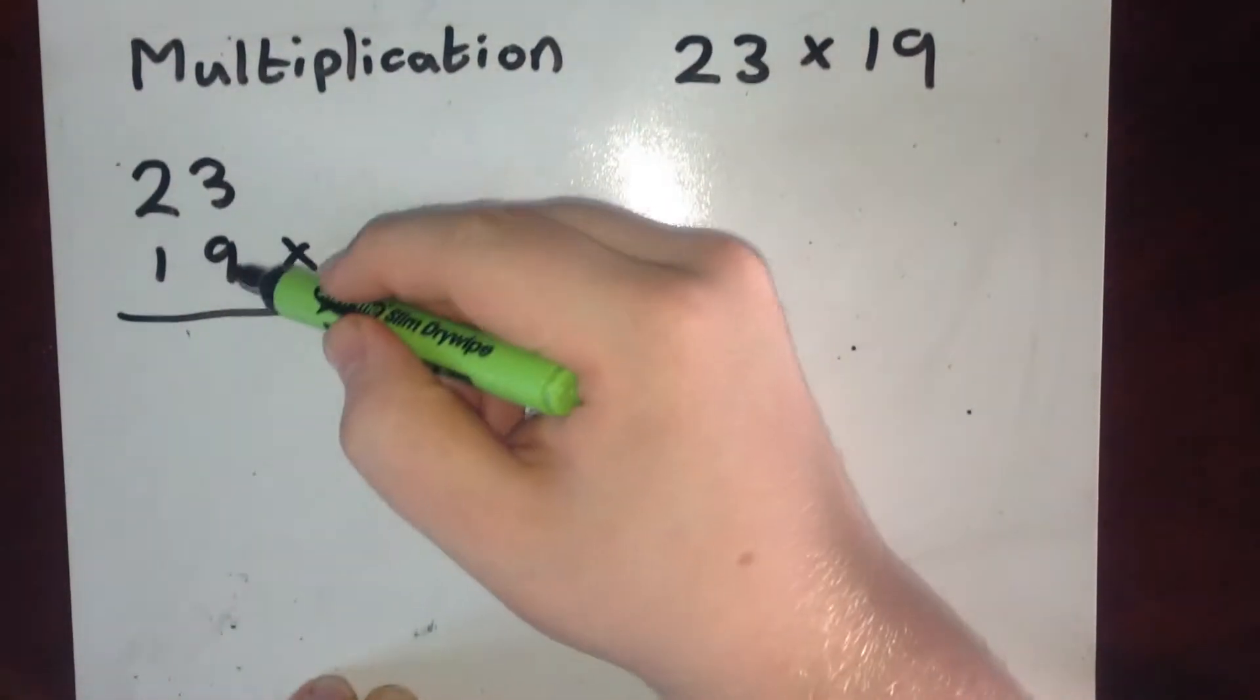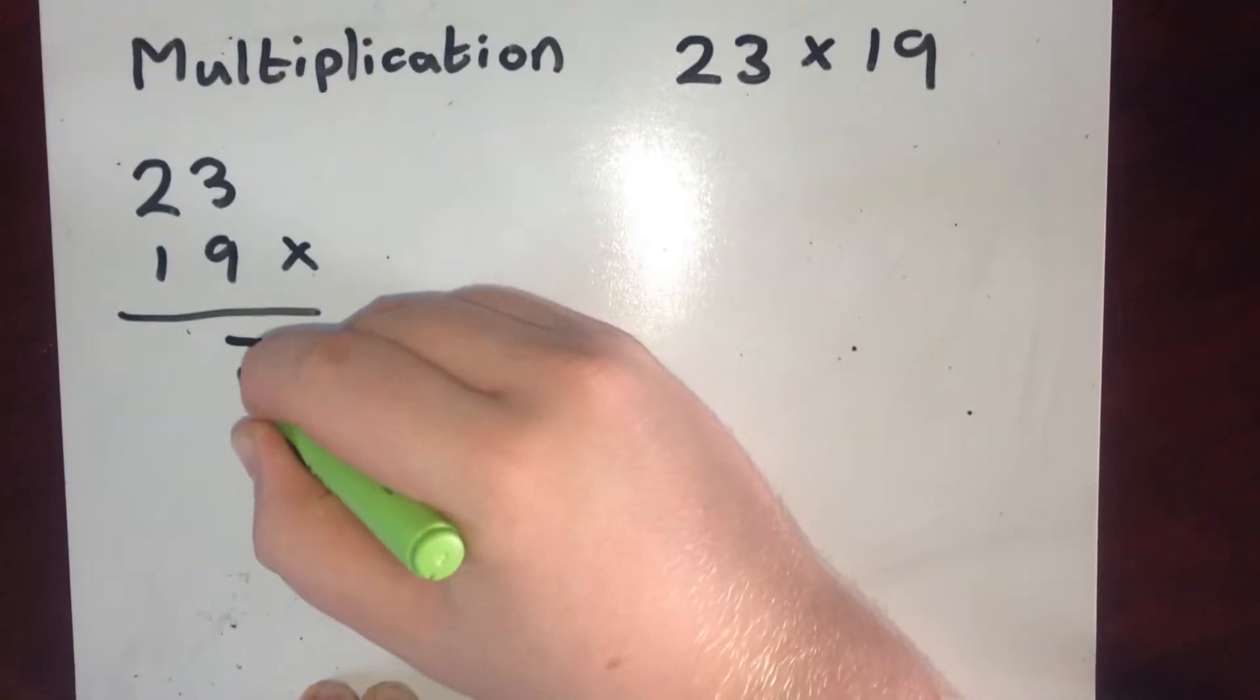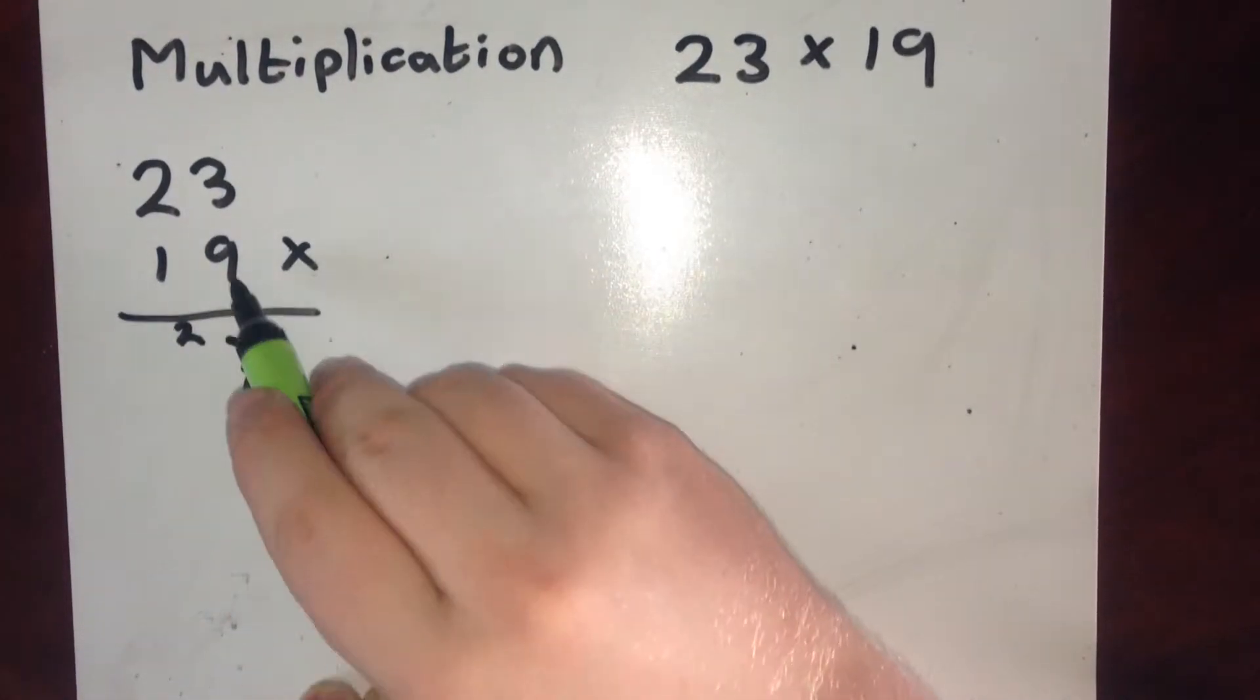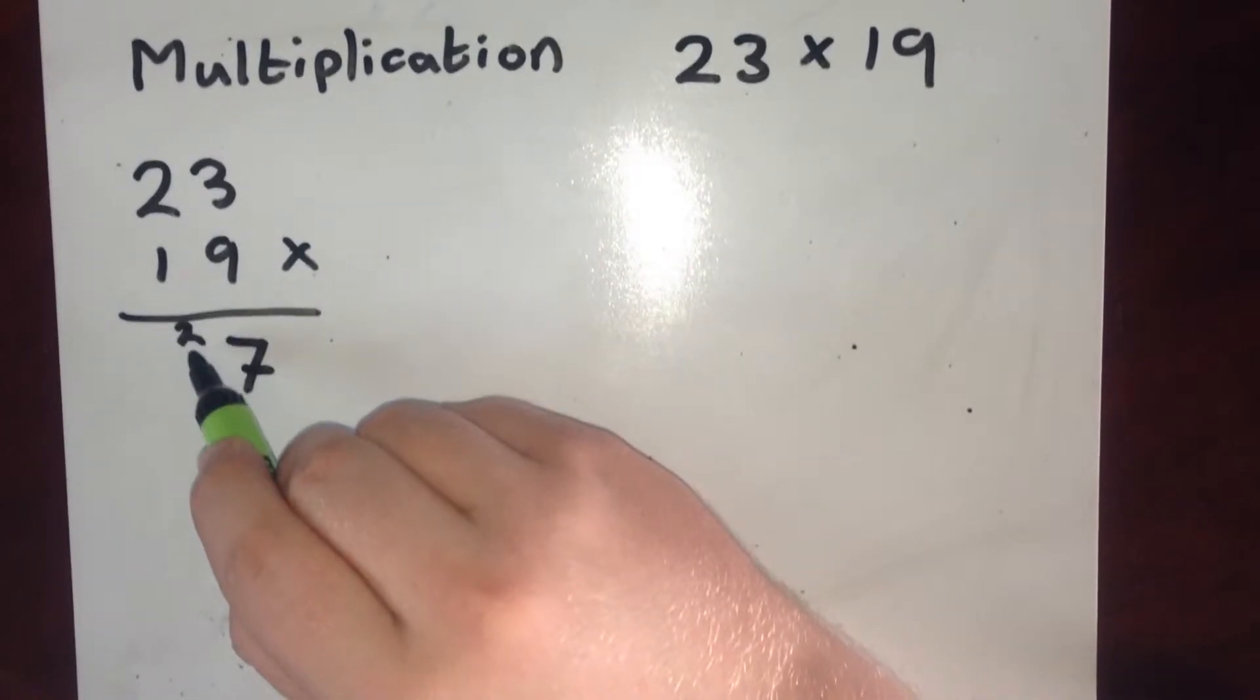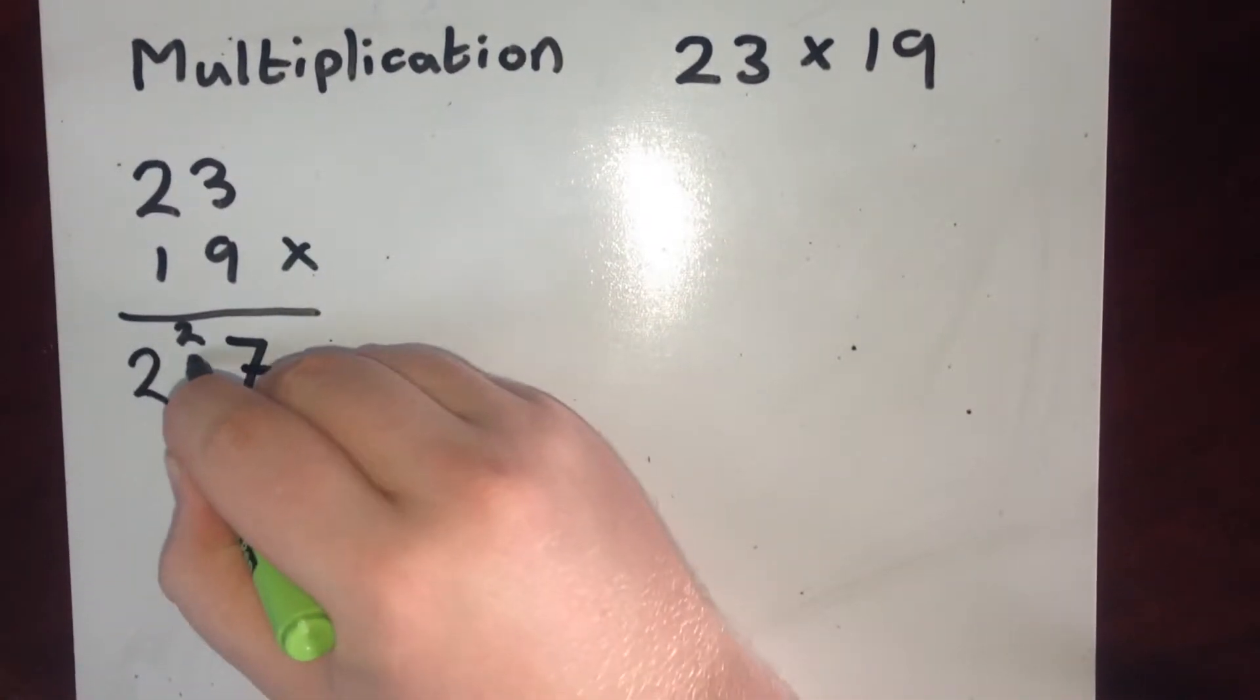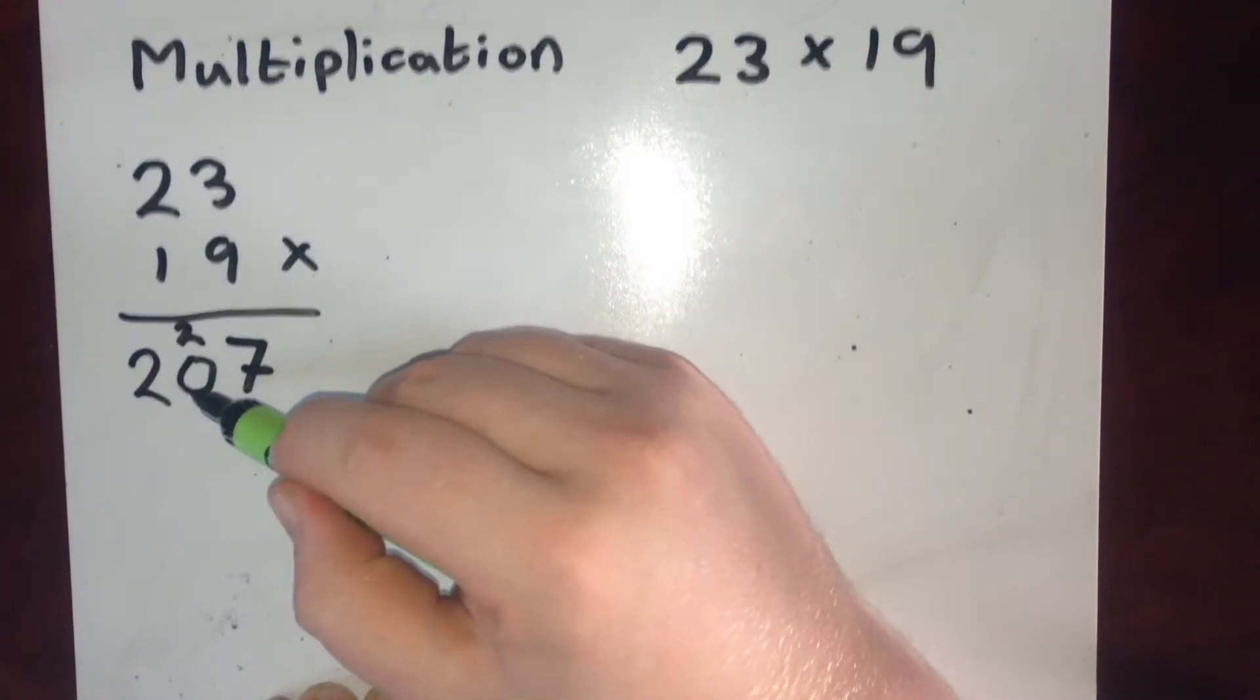I do it like this. So 9 multiplied by 3 is 27. So I put my 7 units down and I carry these two tens. I'm going to use them in a second. I now do 9 times by 2 is 18. And this is where I add on these 2. So 18 plus the 2 is 20. So that gives me 207. So 9 multiplied by 23 is 207.